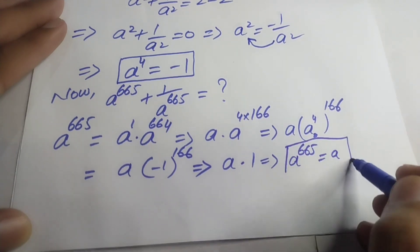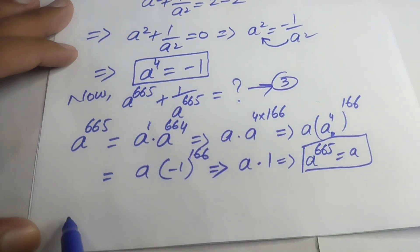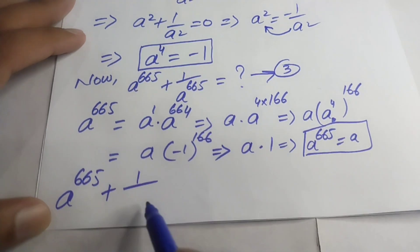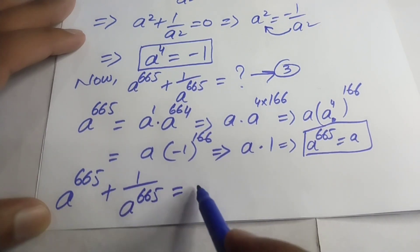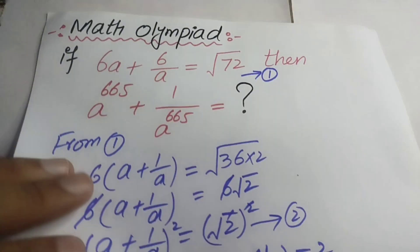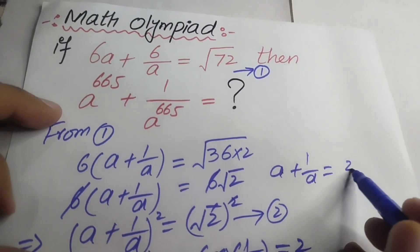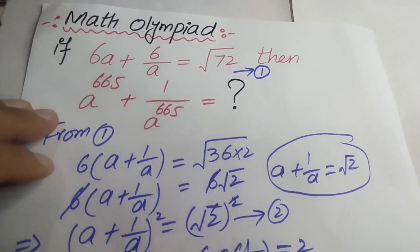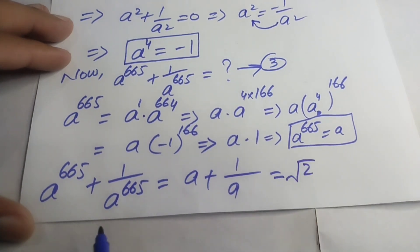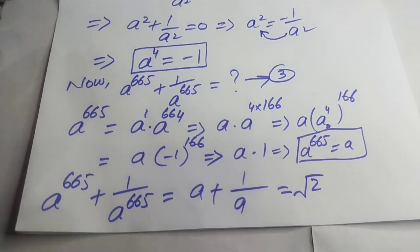When we substitute this value into the expression, we obtain: a^665 + 1/a^665 = a + 1/a. We already found that a + 1/a = √2. Therefore, substituting gives us a^665 + 1/a^665 = √2. This is our required answer. Thank you so much for watching my video.